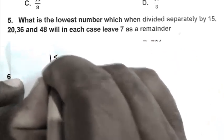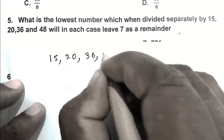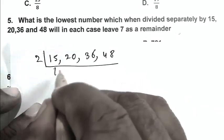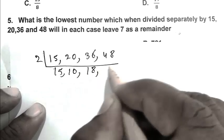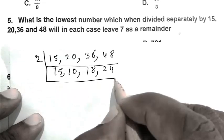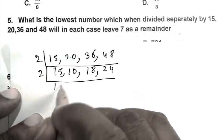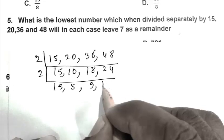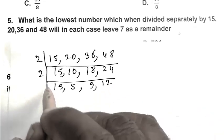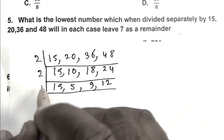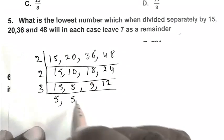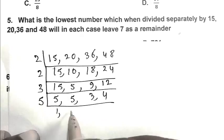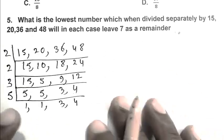The numbers are 15, 20, 36 and 48. Dividing by 2: 15, 10, 18, 24. Again by 2: 15, 5, 9, 12. By 3: 5, 5, 3, 4. By 5: 1, 1, 3, 4.